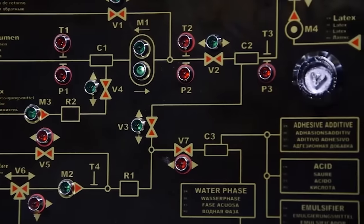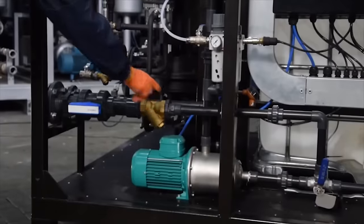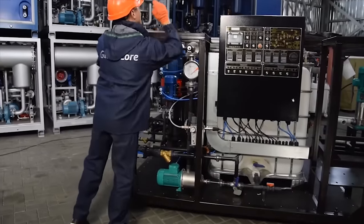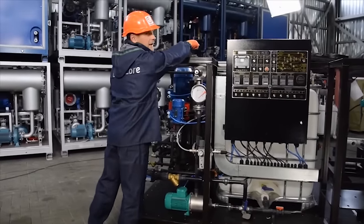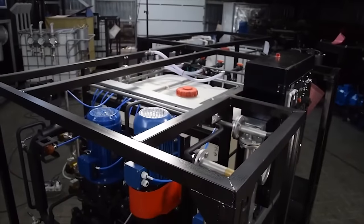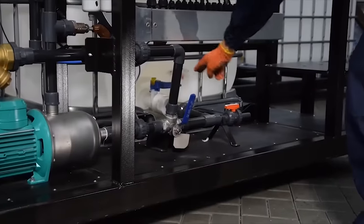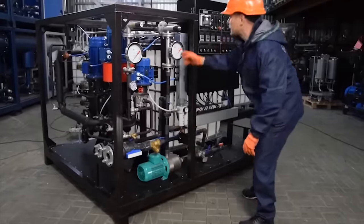The first stage is to prepare the water phase. With this pump, we pump water into the unit's tank. Then with the same pump, we take the water from this tank and circulate it through a hydrodynamic mixer.